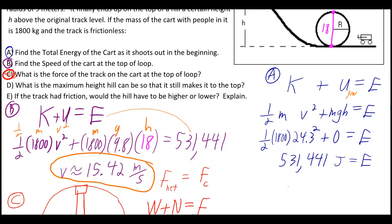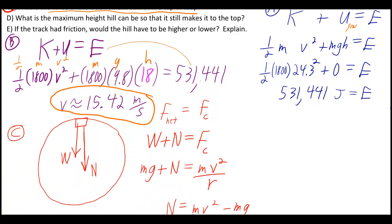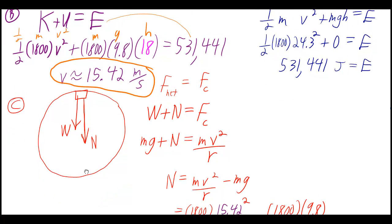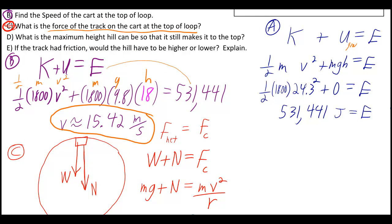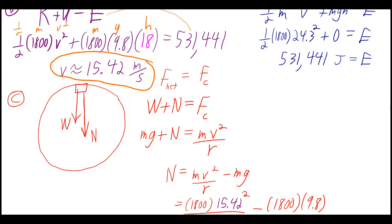When they ask you for the force of the track on the cart at the top of the loop, that's asking you for the normal force. And I drew a force diagram here, I included the circle. The normal force is actually the force of the track on the cart at the top of the loop. But then what you also want in your force diagram is the weight. And then what you've got to know is that the centripetal force is always the sum of all the forces. In other words, the net force. In this case, the weight plus the normal force.